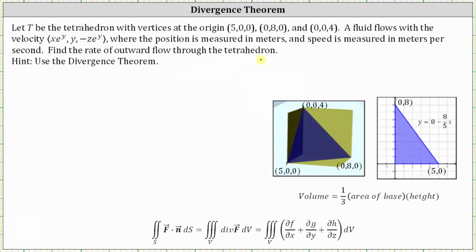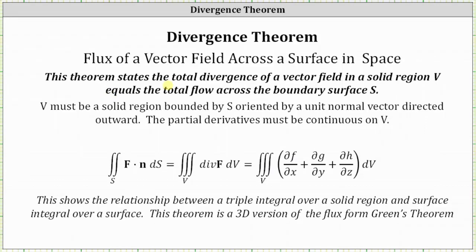Because we're looking for the outward flow or outward flux through the entire tetrahedron, we can apply the divergence theorem to determine the outward flow. The divergence theorem states that the total divergence of a vector field in a solid region V equals the total flow across the boundary surface S, which means we can determine the total outward flow by evaluating the triple integral over the solid region V of the divergence of the given vector field.